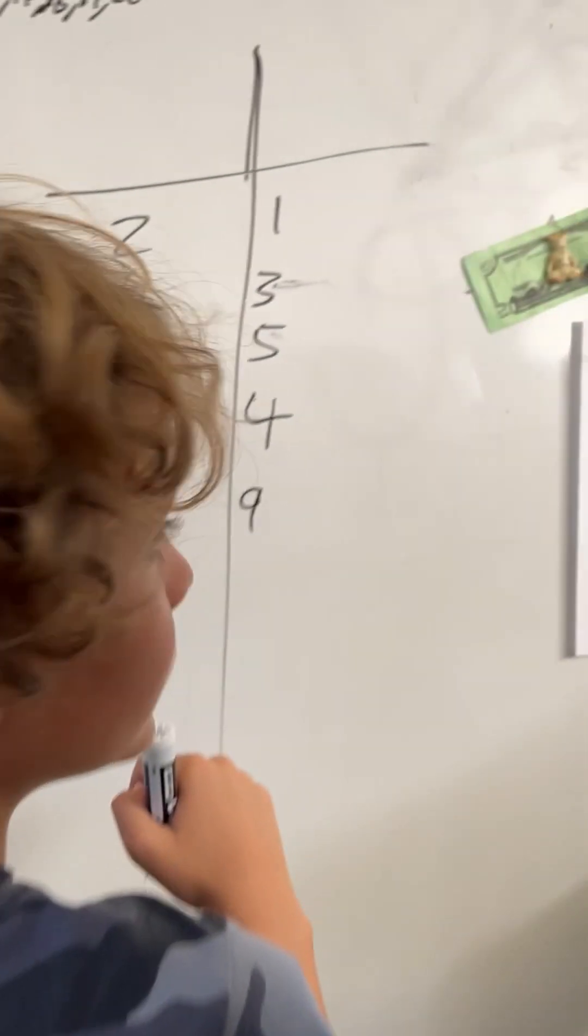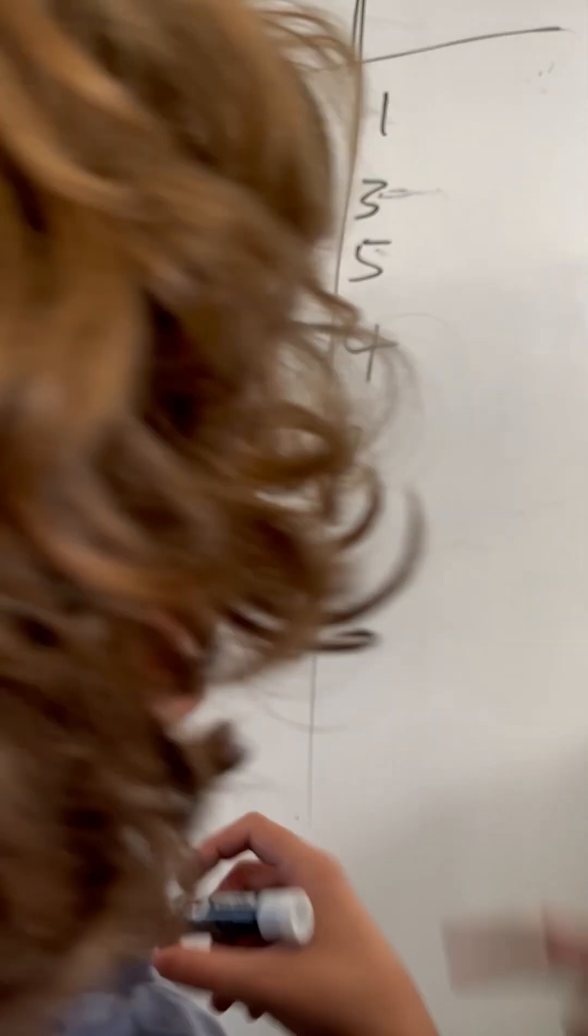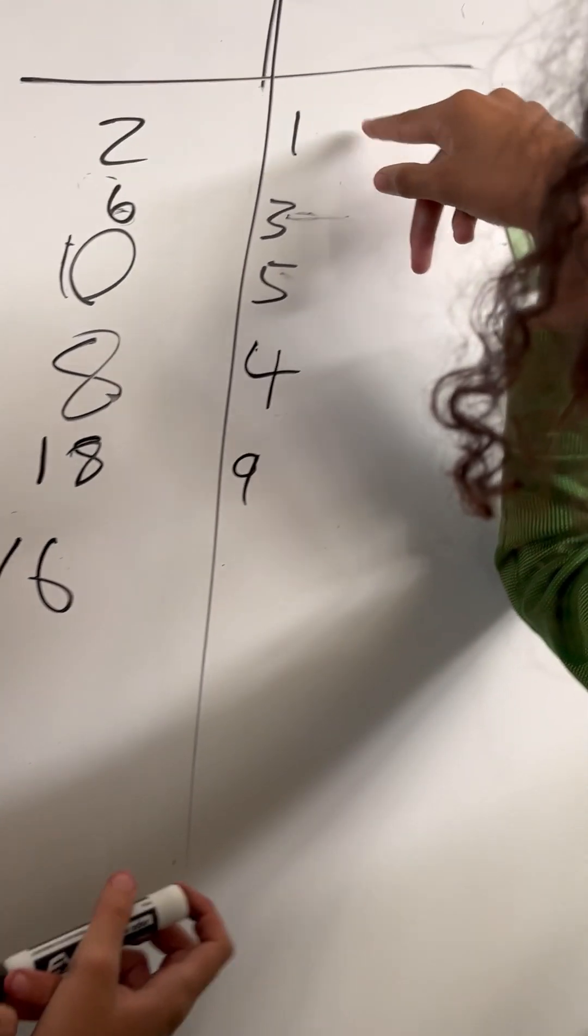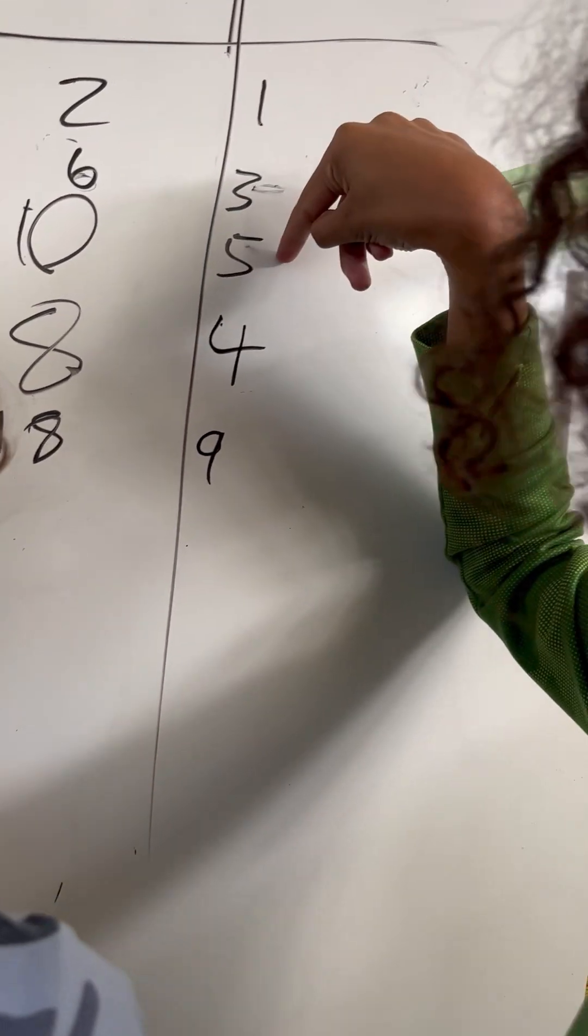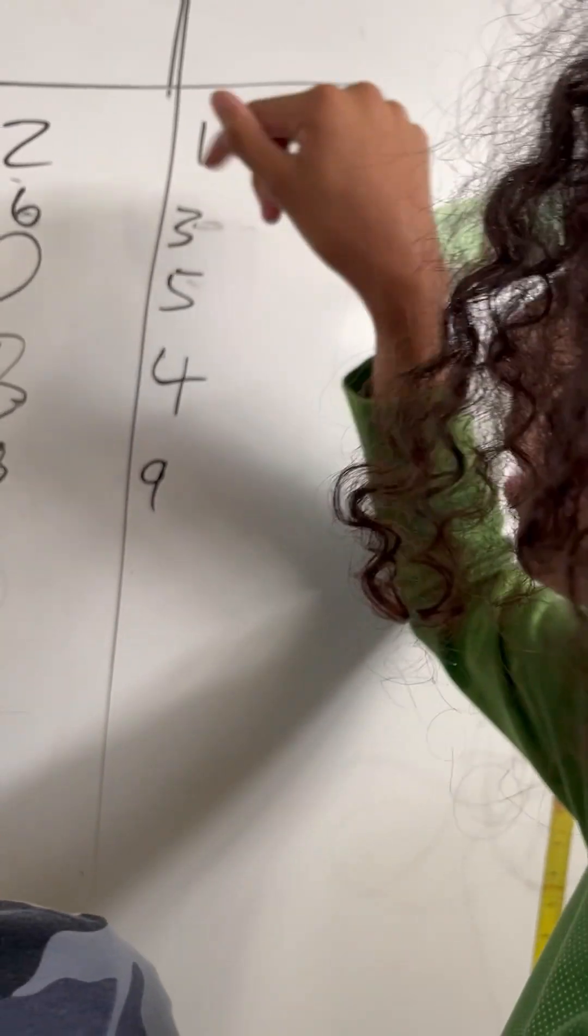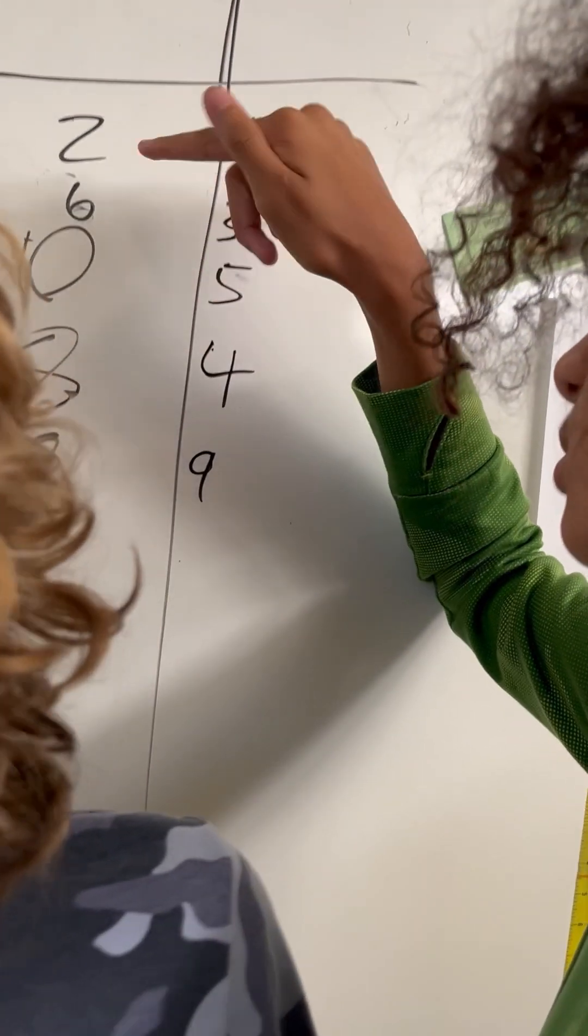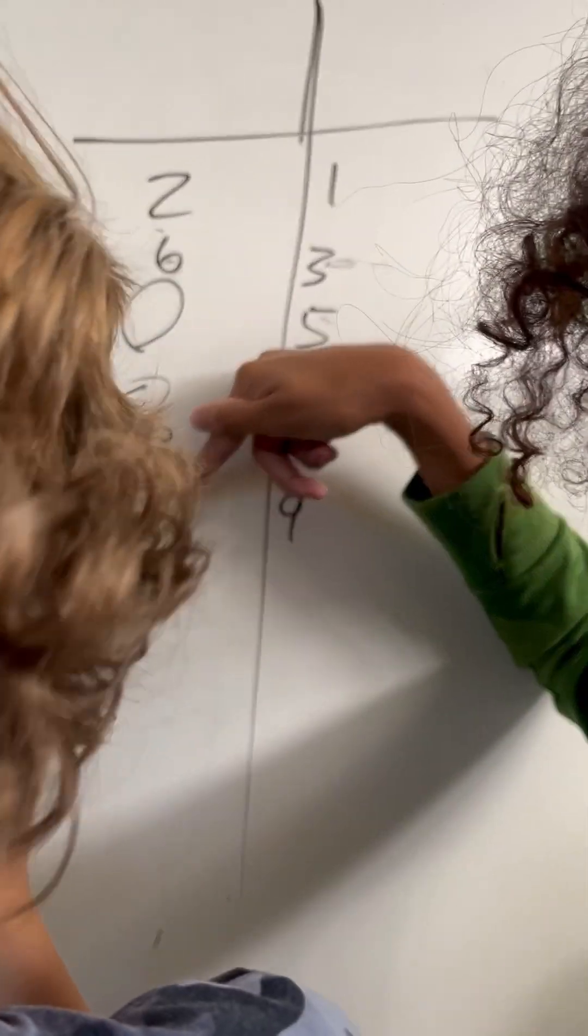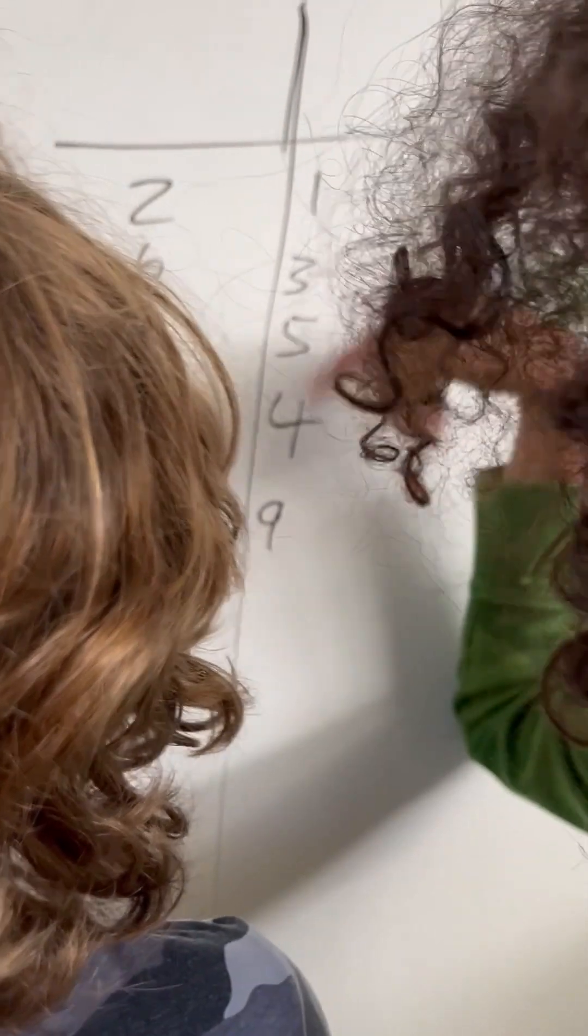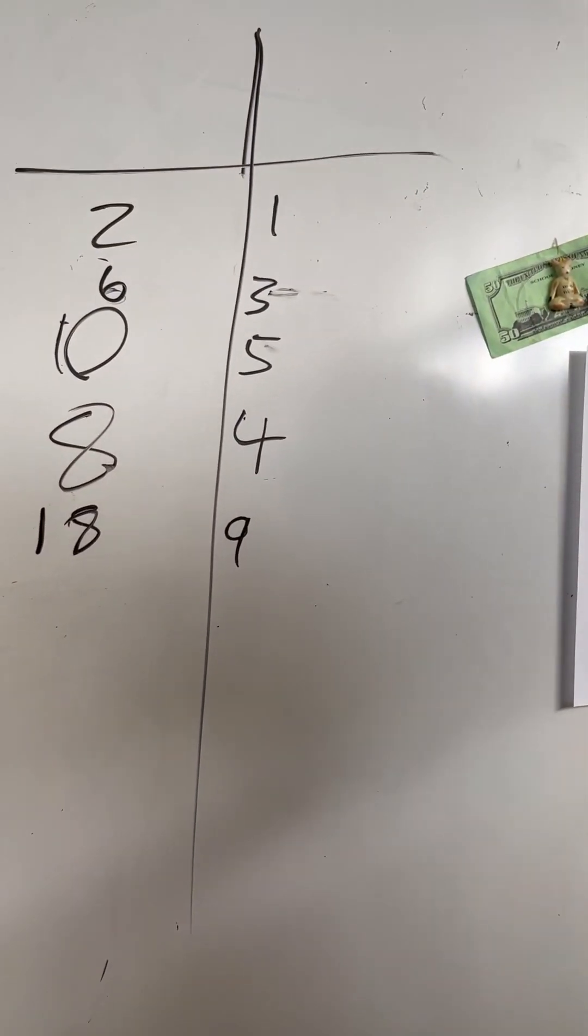So can you tell me about what you started with here? We started with 2. Okay, and I got 1. So we got 6, so we got 3, but we already used 2 so we can only put 3. I see. And we put 10, but then we put 5, but we can only use 5 because we already have 2. We put 8, but we couldn't use 2 because we already have 2, so we just put 4. And 18, we put 9, but we can't use 2 because we already used 2, so we just put 9. Wow.